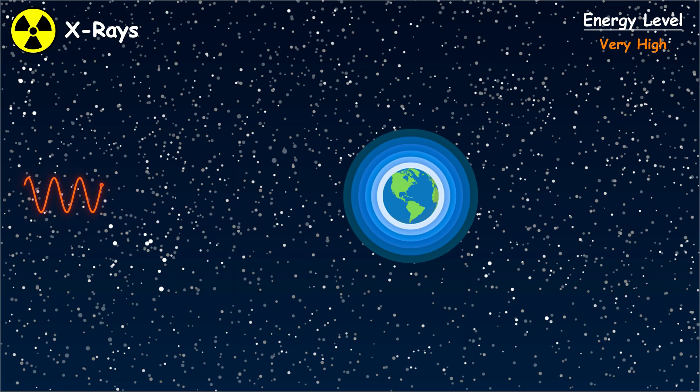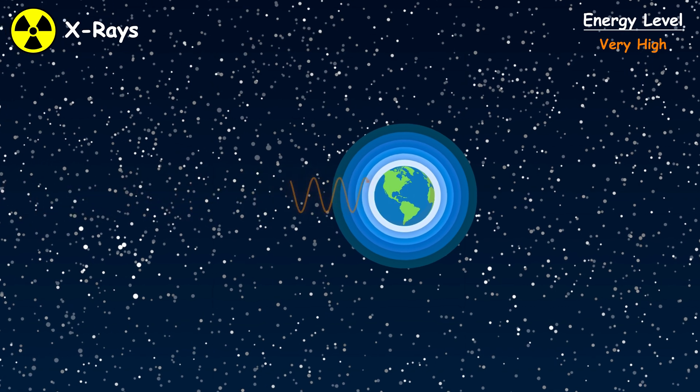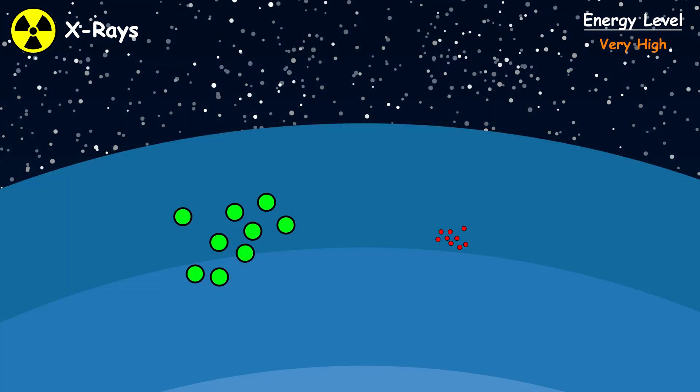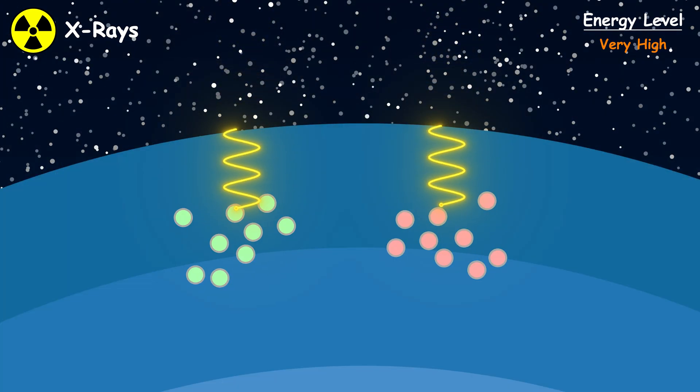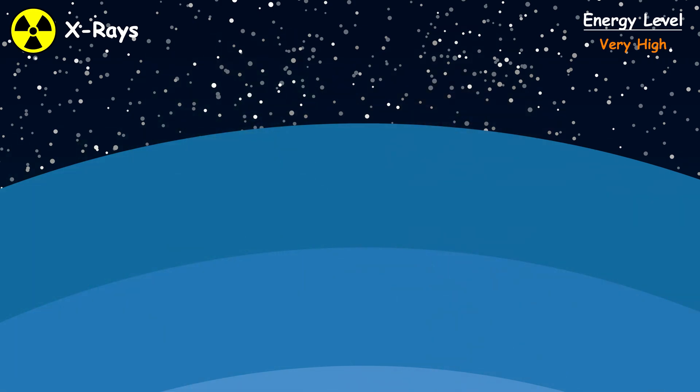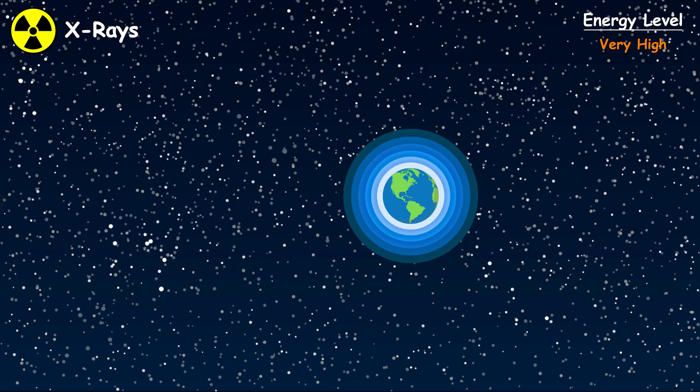Thankfully, Earth's atmosphere acts as a shield, absorbing virtually all solar X-rays before they reach the surface. Oxygen and nitrogen molecules in the upper atmosphere sacrifice themselves, breaking apart to stop them from penetrating to ground level. Without this protection, they would sterilize Earth's surface from living beings within hours.